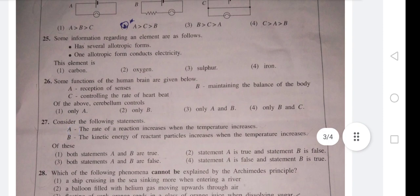Question 25: Some information regarding an element are as follows - has several allotropic forms, one allotropic form conducts electricity. So obviously it is the carbon allotropic form. Graphite of carbon conducts electricity and carbon has several allotropic forms - diamond, coal, lampsuit, charcoal.